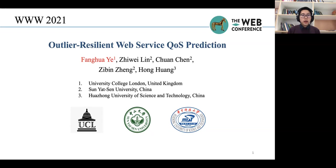Hi, everyone. My name is Fanghua. I'm from UCL. Today, I'm glad to introduce our work Outlier Resilient Web Service QoS Prediction. This is a joint work with Zhiwei, Chuan, Zibin, and Hong.